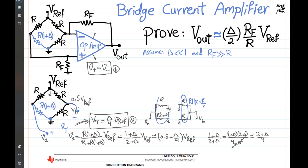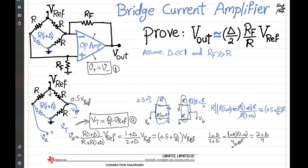The parallel combination of R and R·(1 + delta) equals R·(1 + delta) · R divided by R + R·(1 + delta), which is R·(1 + delta)/(2 + delta). This simplifies similarly to before, giving approximately (0.5 + delta/4)·R. So R-Thevenin is the sum of 0.5·R and (0.5 + delta/4)·R.